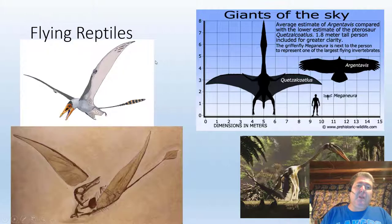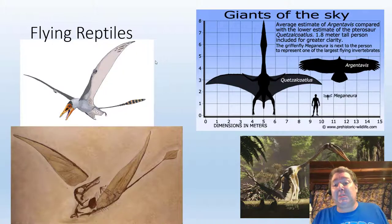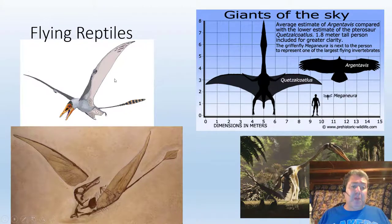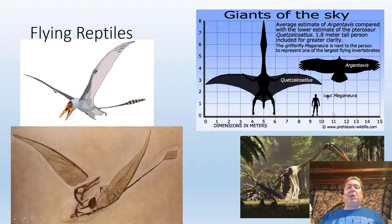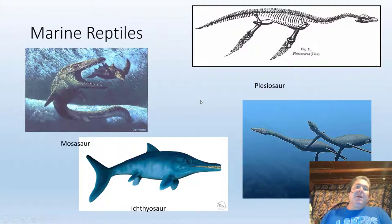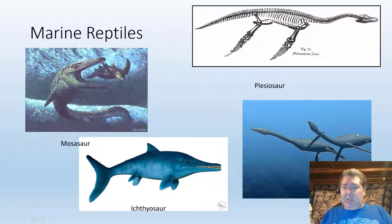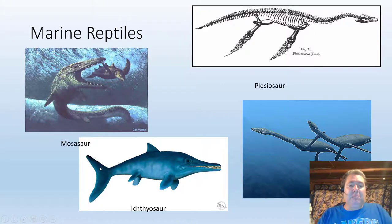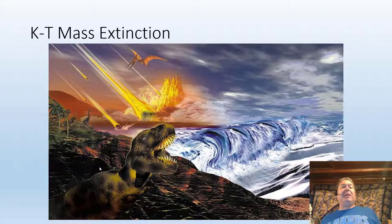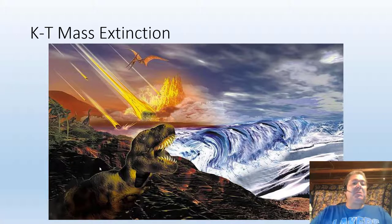We also had giant flying reptiles in the Mesozoic — not dinosaurs, even though they're always in your dinosaur play sets. These are pterosaurs. The biggest, Quetzalcoatlus, would have been the size of a small Cessna aircraft. There were also marine reptiles — no flying or swimming dinosaurs except the birds. Marine reptiles included mosasaurs, which may inspire the Loch Ness monster myth, and ichthyosaurs.